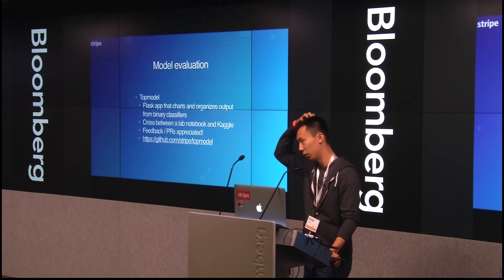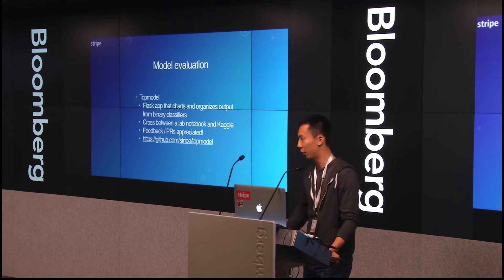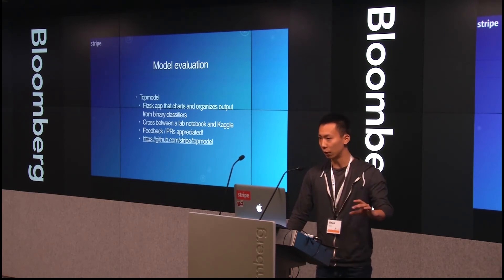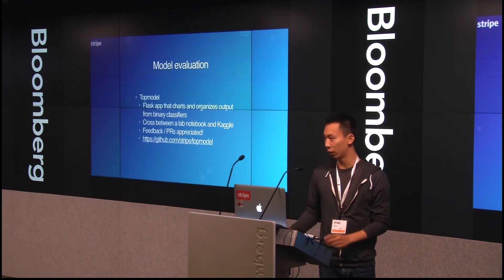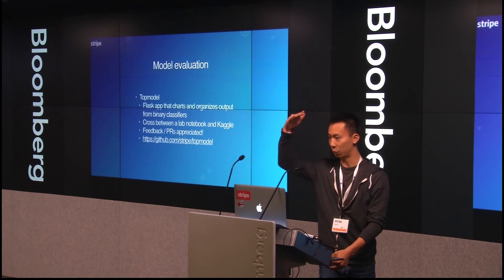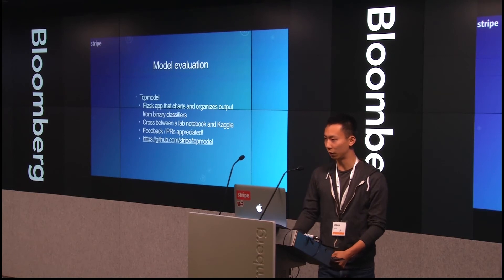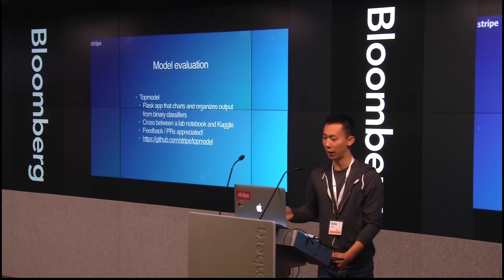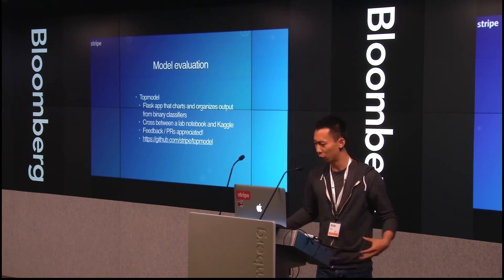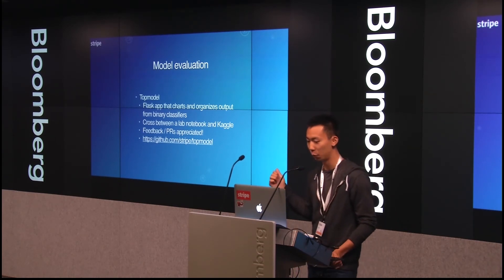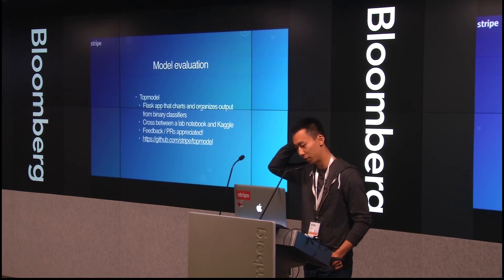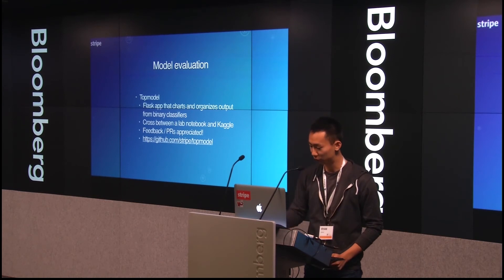Kaggle is a website that lets you do prediction competitions. It's quite conducive to creating really good models because you have a standard truth — Kaggle gives you a test set, everybody trains on the same data, evaluates on the same test set, and you have a leaderboard. It's easy for people to optimize: try adding these features, tune these parameters. Top Model tries to recreate that environment as much as possible. Also, it's open source — if you want to try it out or send PRs, please do.